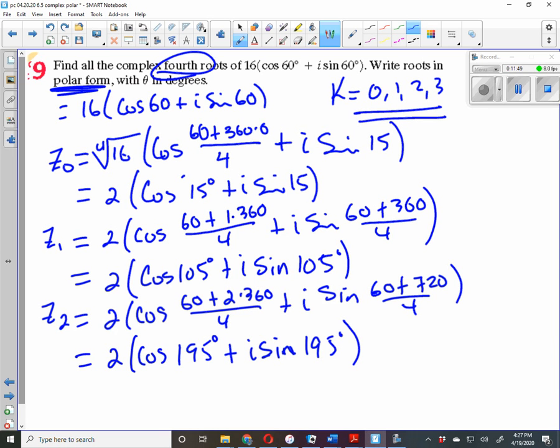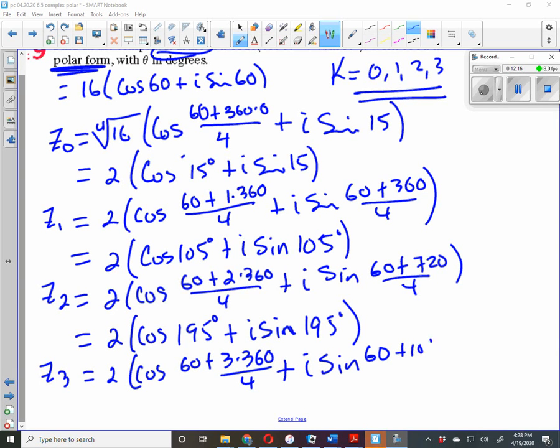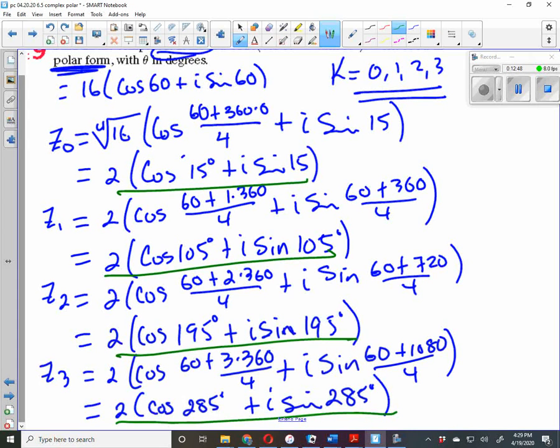And then one more, z₃ is equal to the fourth root of 16 is 2, cosine (60 + 3×360) over 4, plus i sine (60 + 1080) divided by 4. And this all equals 2 cosine 285° plus i sine 285°. Notice you have 1, 2, 3, 4 answers there for finding the fourth root. If it was a cube root, you would have 3 answers.